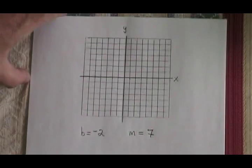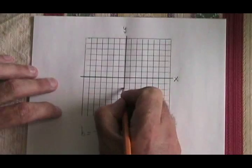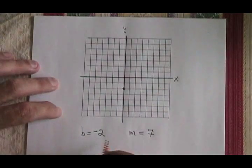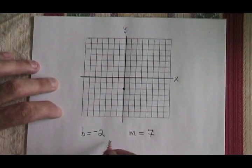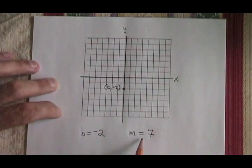Here's one last example. In this one, I've also been given a b. And it's negative 2. So I know that the point 0, negative 2 is on my line. My slope, though, is not in the form of a fraction. It's a whole number 7.